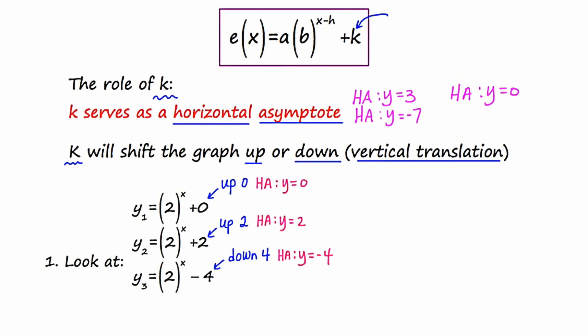I've given you three different exponential curves. y₁ is 2 to the x plus 0, y₂ is 2 to the x plus 2, and y₃ is 2 to the x minus 4. In each of these the base is 2, and because 2 is greater than 1, we expect exponential growth. In the first case k equals 0, so we shift the growth curve up 0 — HA at y equals 0. In the second case k equals 2, shifting the curve up 2 — HA at y equals 2. In the third example k equals negative 4, shifting the whole graph down 4 — HA at y equals negative 4.